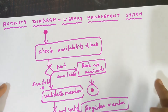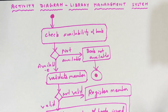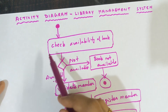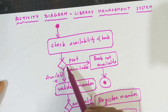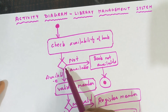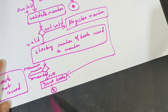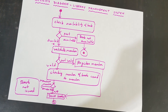This is the flow in which the library management system works, and in this way you need to draw the activity diagram. Don't forget these symbols: for start, draw a filled circle; for an activity, draw a rectangle with rounded corners; for a decision or condition, use a diamond box; and for stop, draw a circle with a small filled circle inside. This is the final activity diagram. Thank you.